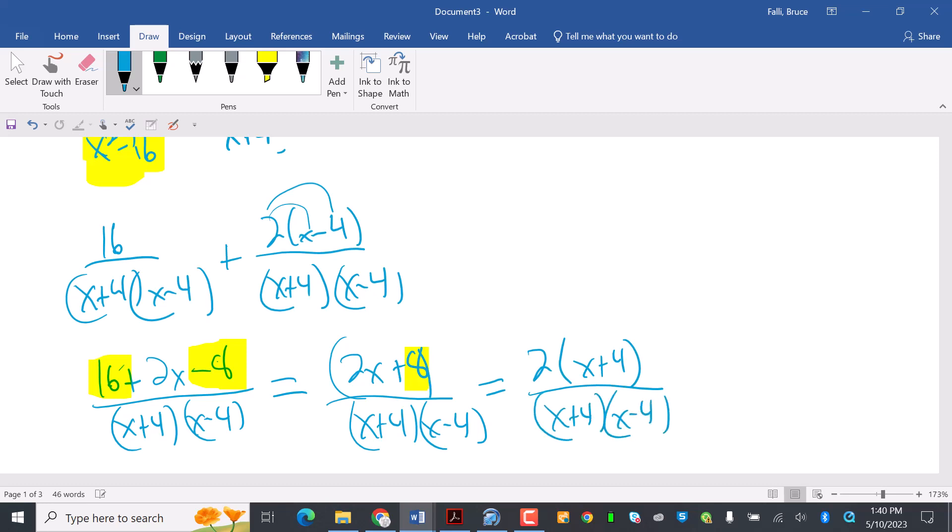2x plus 4 over x plus 4, x minus 4. Now I want to tell you this. Whenever you have stuff in the denominator that's like this, you're going to look to cancel it. Because you probably will get something to cancel. So see how my x plus 4 is going to cancel. So I'll get 2 over x minus 4. That's number 8.